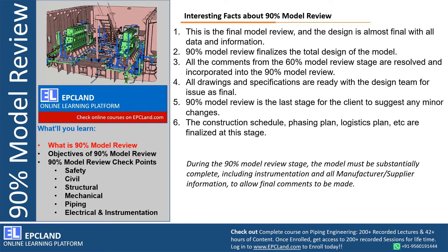All the comments from the 60% model review — anything which was open and carried over from 60% model review — has to be resolved before the 90% model review is carried out. Whatever open points were there during 60% need to be closed prior to 90%. If any concern needs to be discussed during 90%, that can be presented. We can always inform the client that there are a few points still open which need information from other teams, such as construction or operation. All drawings and specifications are ready, all deliverables, all vendor information — everything is ready and incorporated in the 3D model.